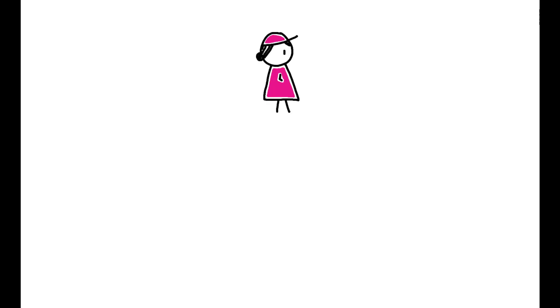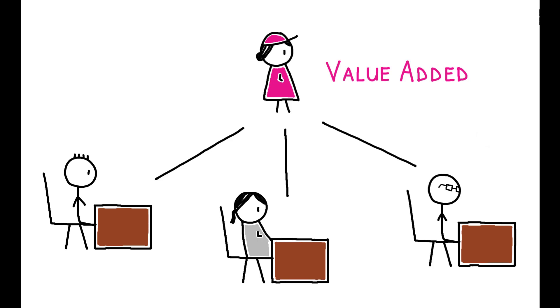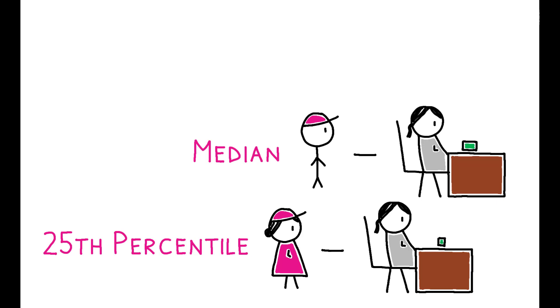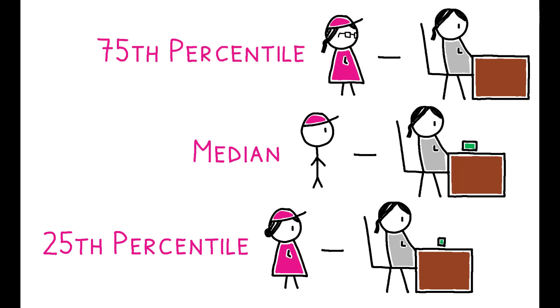On the manager side, quality is measured by manager value added. This is the impact a manager has on her subordinates' sales after controlling for other variables. When assigned to a 25th percentile manager in these data, a worker's output is roughly half of what it would have been under the median manager. When assigned to a 75th percentile manager, output more than doubles.